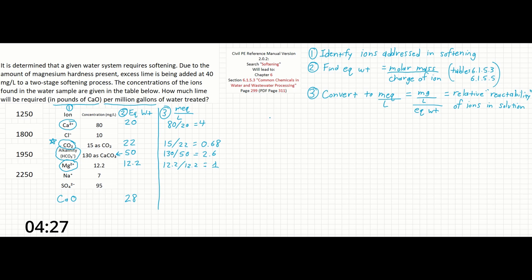Once this is done, we can sum up all of these ions that are used and find our total reactability in milliequivalents per liter. So 4 plus 0.68 plus 2.6 plus 1 gives us a total of 8.28 milliequivalents per liter.